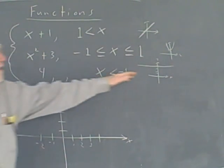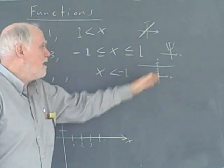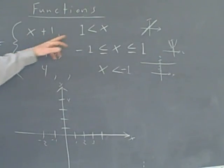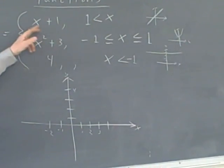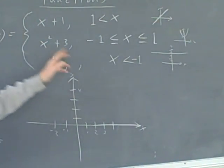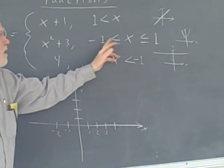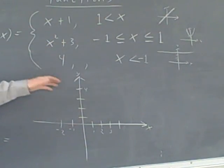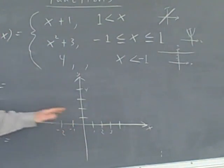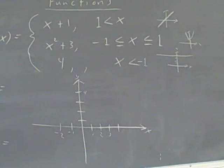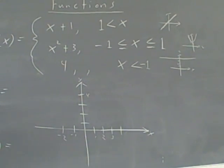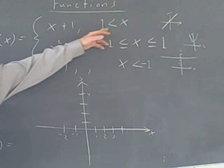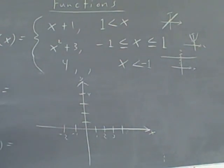But not all of these functions are going to operate at the same time. In fact, only one is going to operate at a time. When x is greater than 1, the first function is in play. When x is between negative 1 and 1 inclusive, the second is in play. When x is less than negative 1, the third is in play. That's why we call it a piecewise function — we split the domain into three pieces.